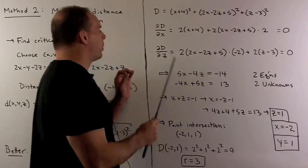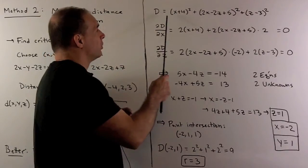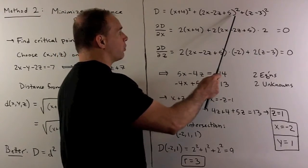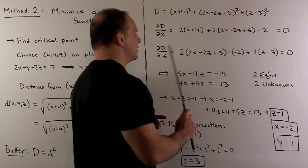Then we move to the partial with respect to z. Same idea. There's no z in here. So it goes to zero. The middle term, we use the chain rule. Third term, we take the derivative as normal. Then we set it equal to zero.